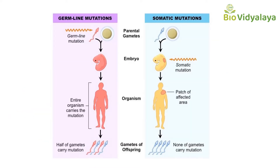What is the difference between germline mutations and somatic mutations? Germline mutations occur in gametes — that means egg or sperm — and can be passed into offspring, so every cell in the entire organism will be affected. Germline mutations are passed from parents to offspring. The genetic disorder cystic fibrosis is due to a germline mutation.